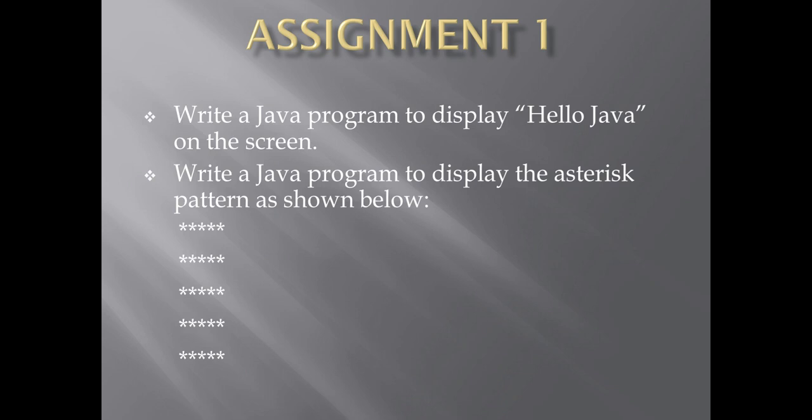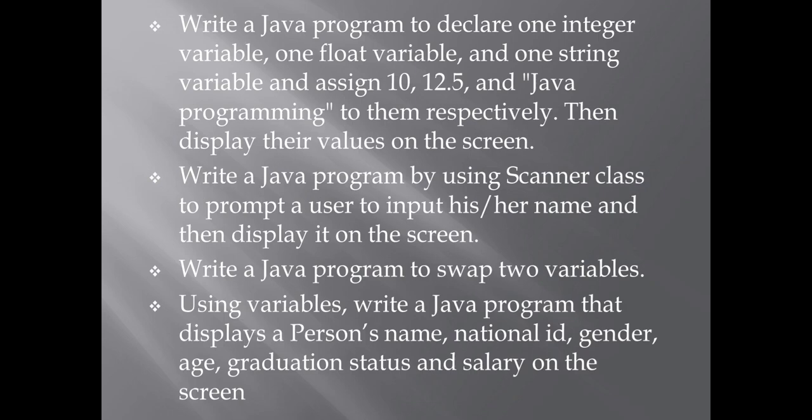Program two: write a Java program to display the asterisk pattern as shown below — five rows of asterisks. Program three: write a Java program to declare one integer variable, one float variable, and one string variable,